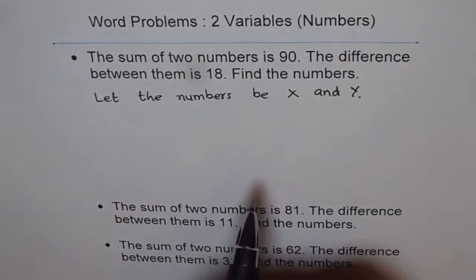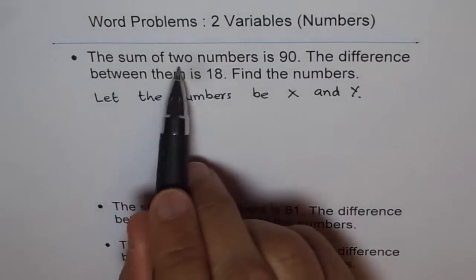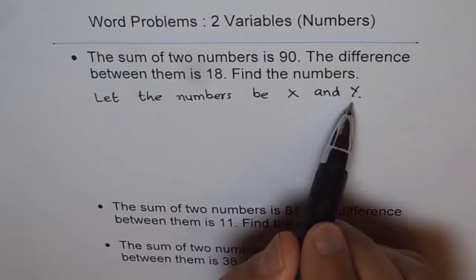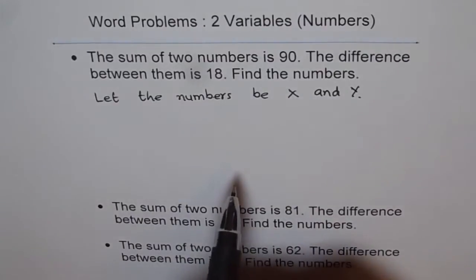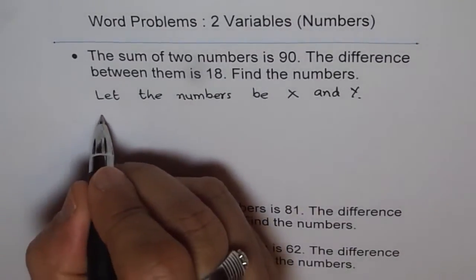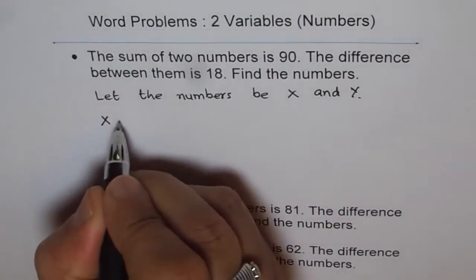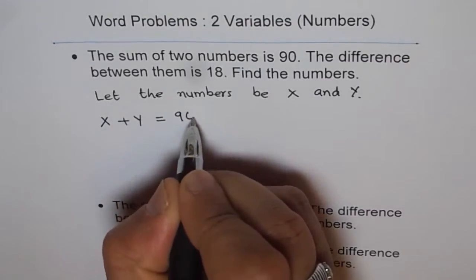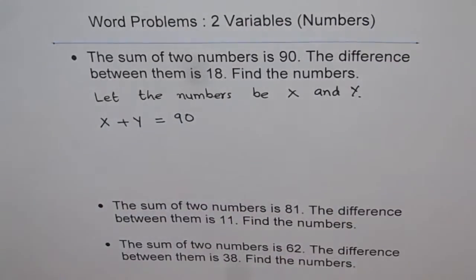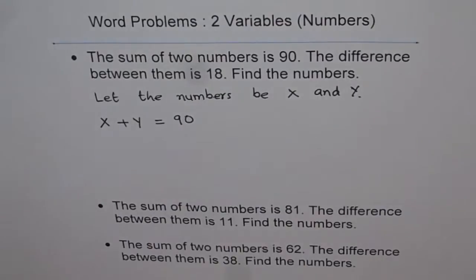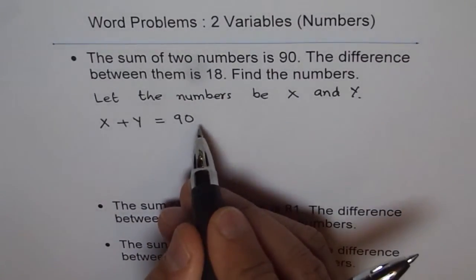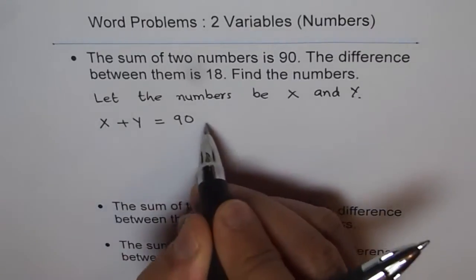The sum of two numbers is 90 — that means when you add them you get 90. So let's write down our equation: X plus Y equals 90. That is our first equation. Once you get your equation, write a number beside it so you know this is equation number one.